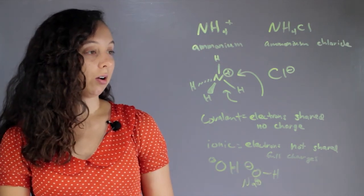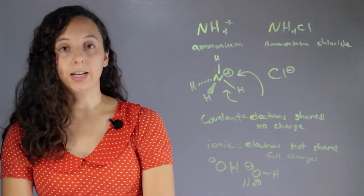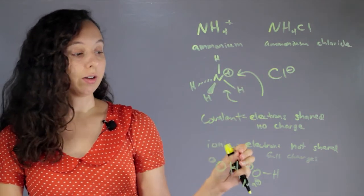And so ionic bonds are formed because opposite charges are attracted. So they won't actually form, but they'll stick next to each other.